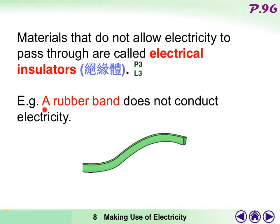Materials that do not allow electricity to pass through are called electrical insulators. For example, a rubber band does not conduct electricity.